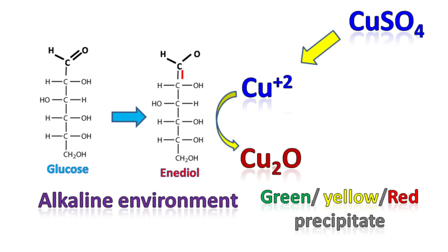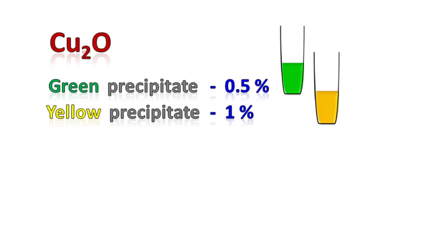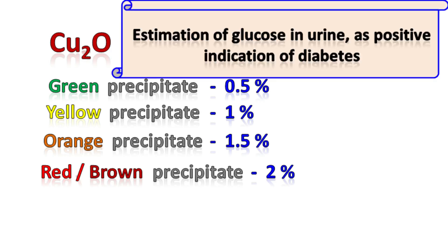The copper oxide precipitate can be green, yellow, orange, or red in color. The color of the precipitate obtained gives an estimate of the amount of reducing sugar present. This has an important role in estimation of glucose in urine as a positive indication of diabetes.